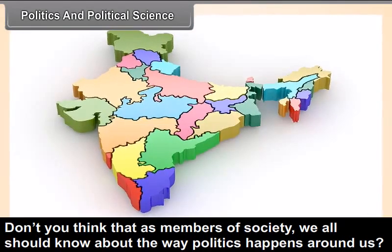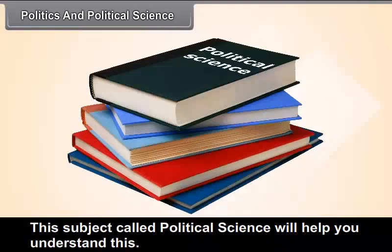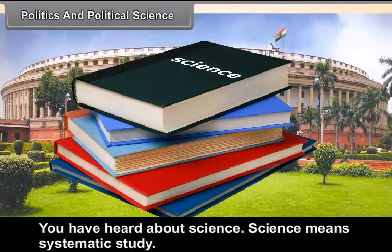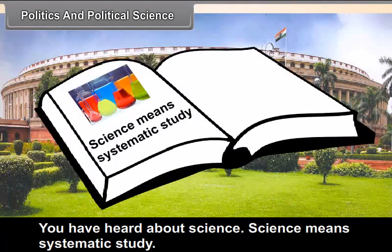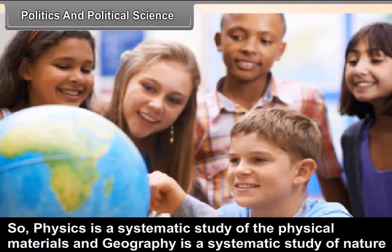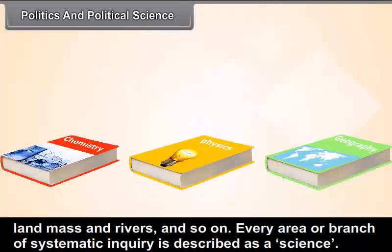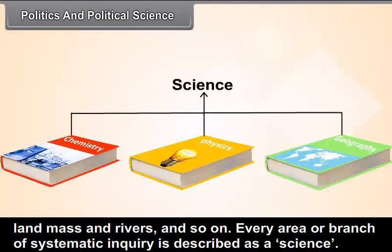Do you think that as members of society, we all should know about the way politics happens around us? This subject called Political Science will help you understand this. What is science? Science means systematic study. Physics is a systematic study of physical materials, and geography is a systematic study of nature and environment, land mass, rivers, and so on.